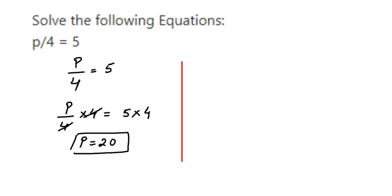One more method is the transpose method. This is very simple. p/4 = 5, and 4 is in division, right? When you transpose, I want to transpose this from the left side to the right side. A number which is in division, when you transpose to the other side, it comes in multiplication. So p equals 5 multiplied by 4, which equals 20. See, we got the same answer.